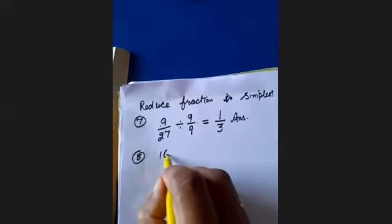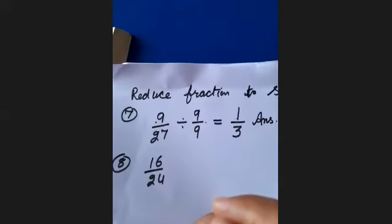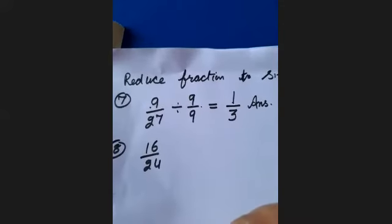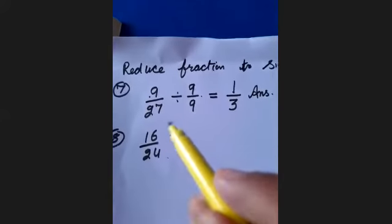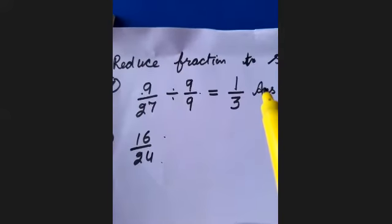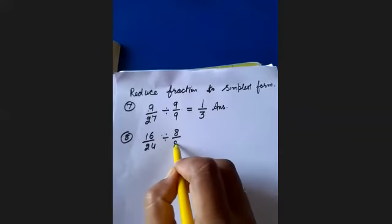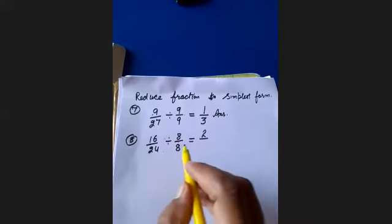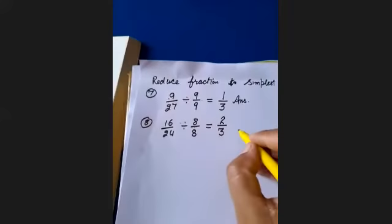Question 8: your fraction number is 16 upon 24. Observe this number carefully. The numerator is 16 and the denominator is 24, and both are multiples of 8. So we will divide by 8. 16 divided by 8 is 2, and 24 divided by 8 is 3. So the answer is 2 upon 3.